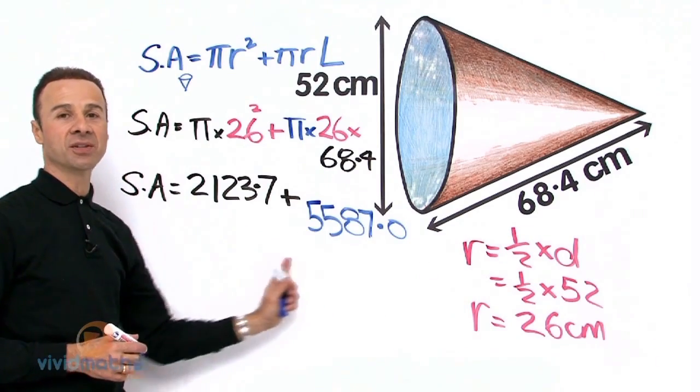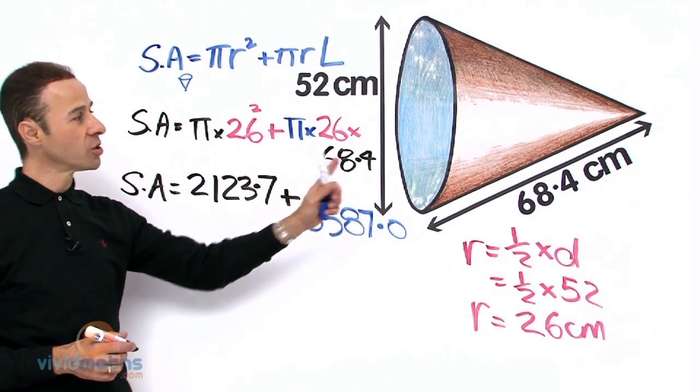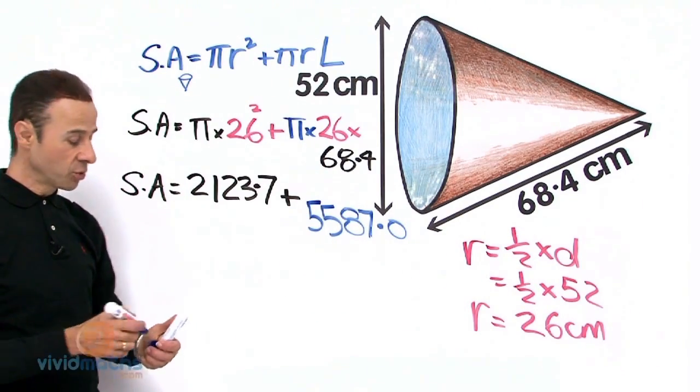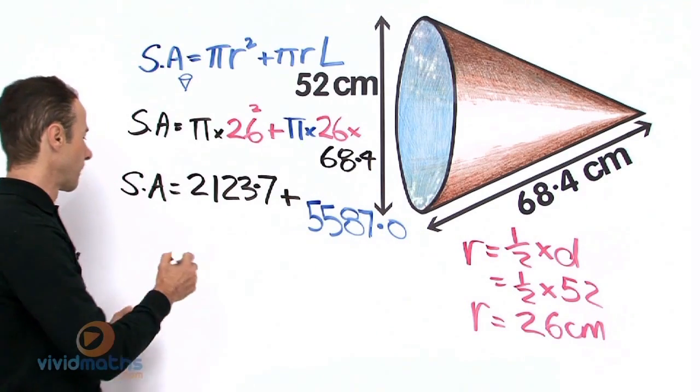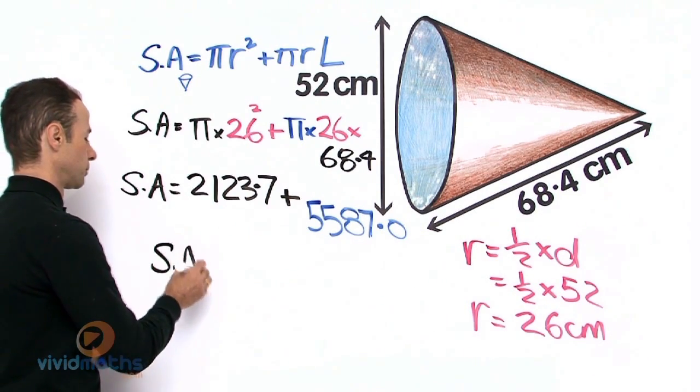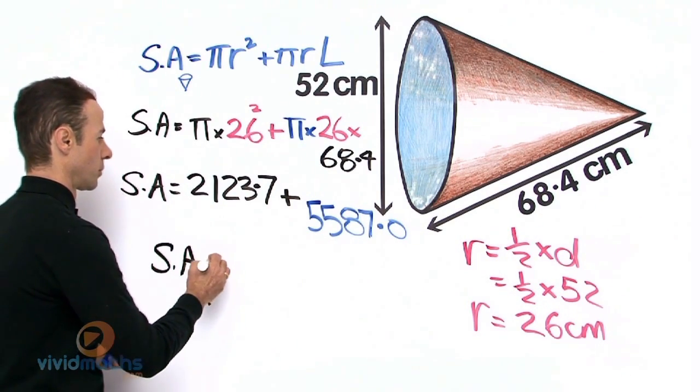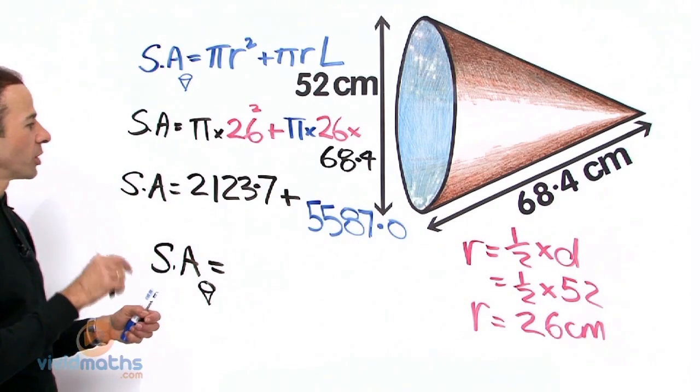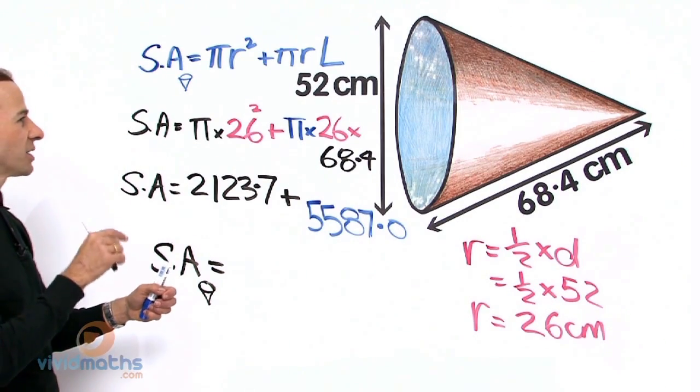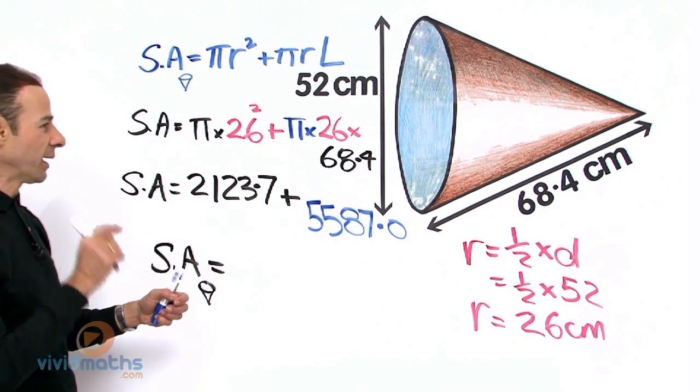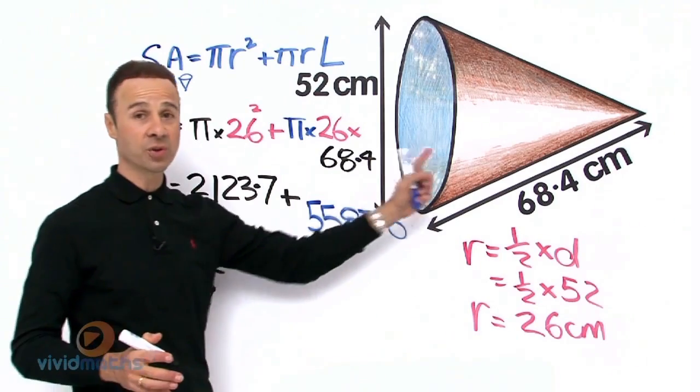And that is going to yield 2123.7 plus 5587.0 equals grand total entire surface area of 7710.7 centimeters squared.